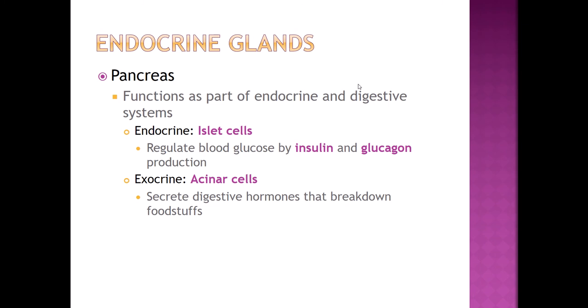The pancreas has both an endocrine function and an exocrine function, essentially serving two organ systems — the endocrine system and the digestive system. The endocrine portion consists of islet cells, which produce insulin and glucagon to regulate blood sugar. Glucagon raises blood sugar; insulin decreases it — they are antagonistic to each other. The acinar portion of the pancreas secretes digestive enzymes into ducts — that's why it's an exocrine gland — and those enzymes help break down food so we can extract nutrients from it.